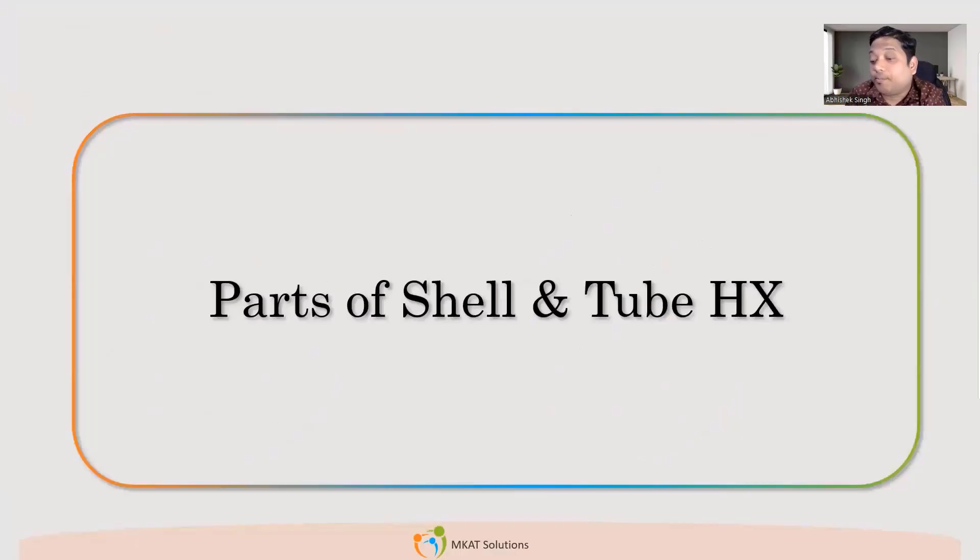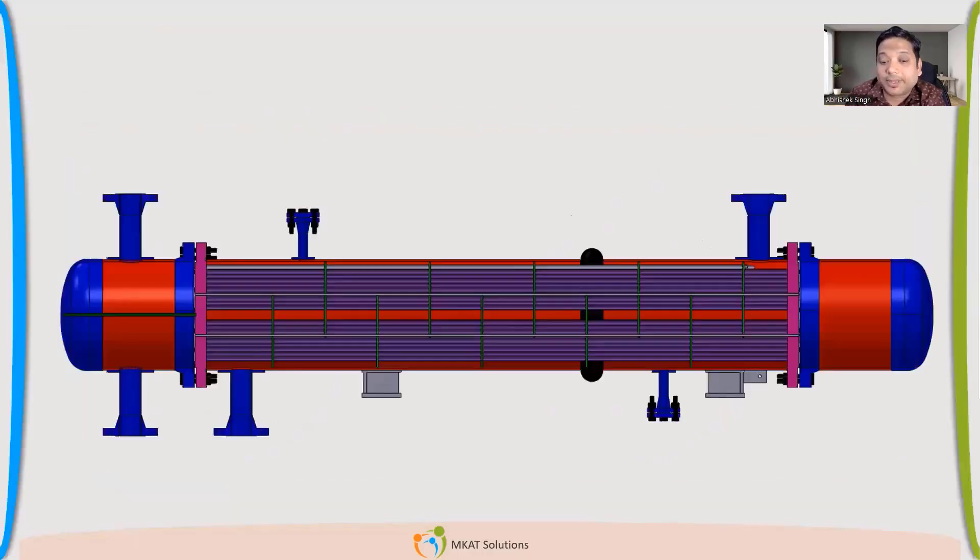We'll talk about the different parts of shell and tube heat exchangers. What are the different parts? It's nomenclature part. It's very simple nomenclature.